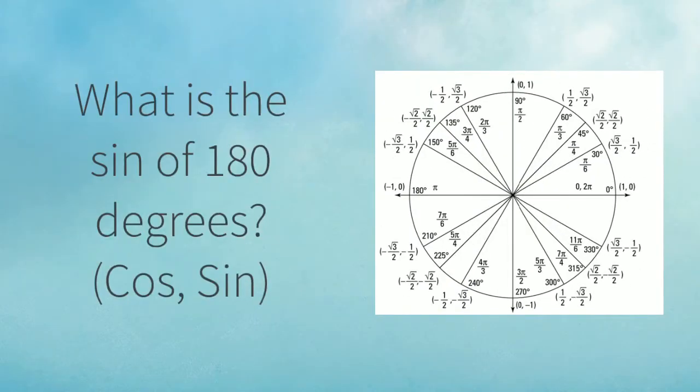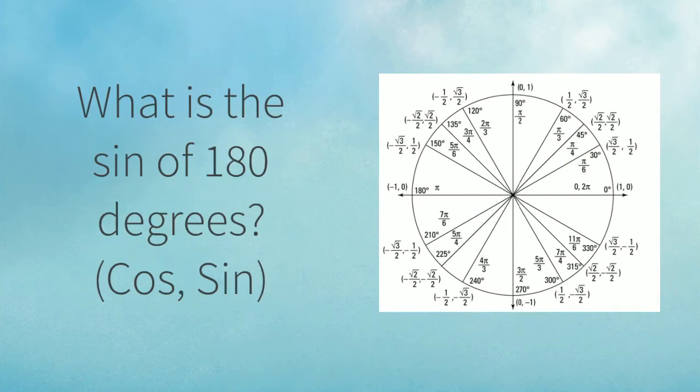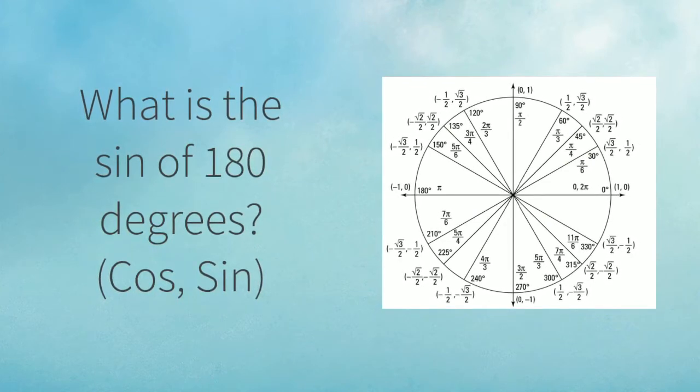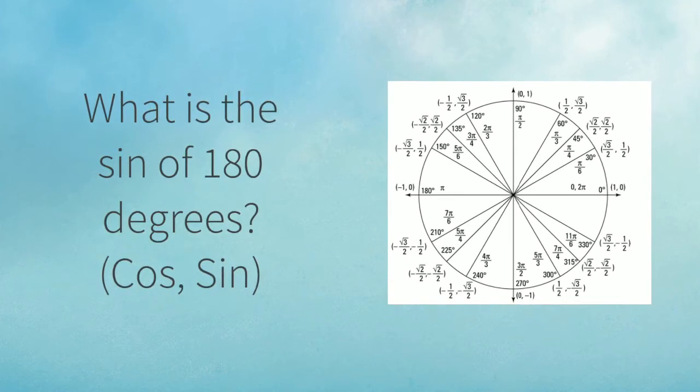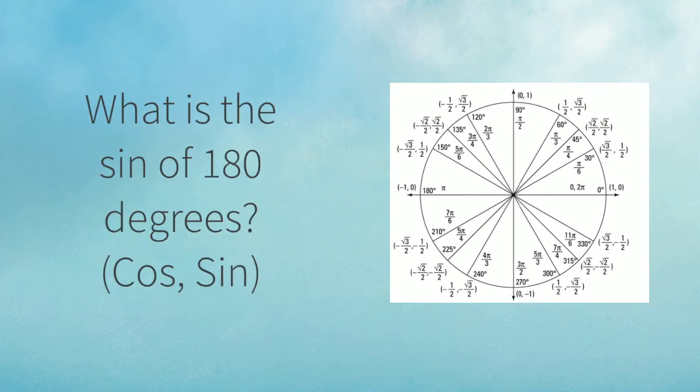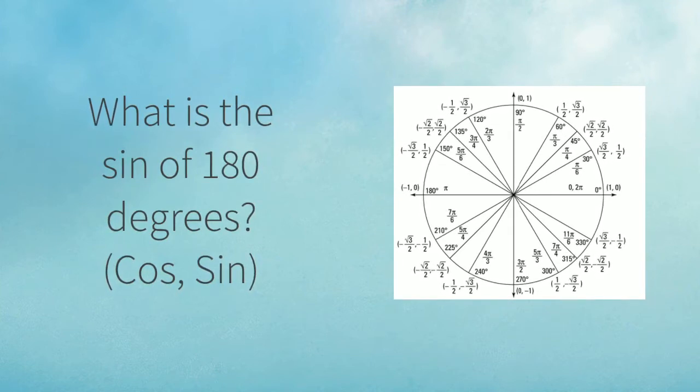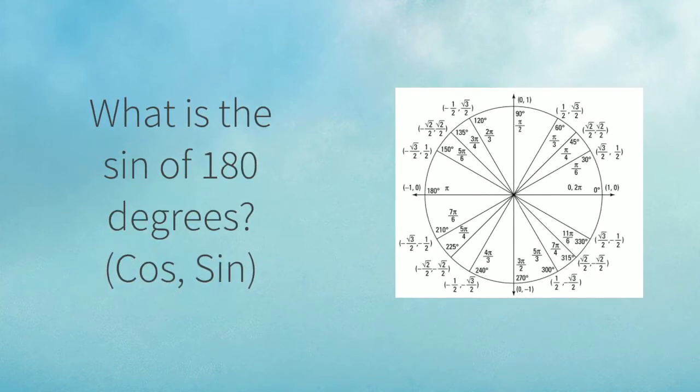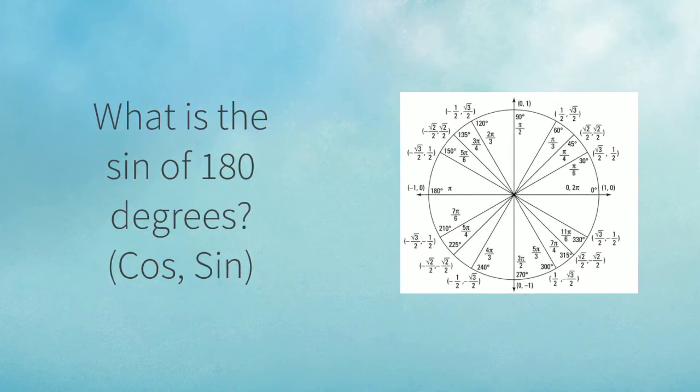You can use the unit circle to find out many things, such as sine of certain degrees. You can find the sine of 180 by looking at the y coordinate of 180 degrees or pi radians. You know that the sine of 180 degrees is 0 because the y coordinate of 180 is 0. In a similar way, the cosine of 180 degrees is negative 1 because that's the x coordinate. Each coordinate is in the formation of cosine and sine.